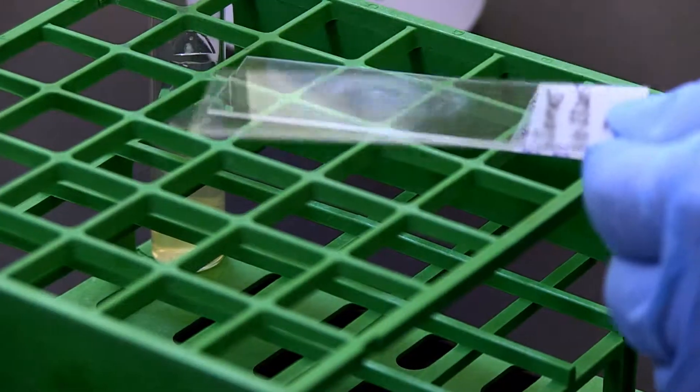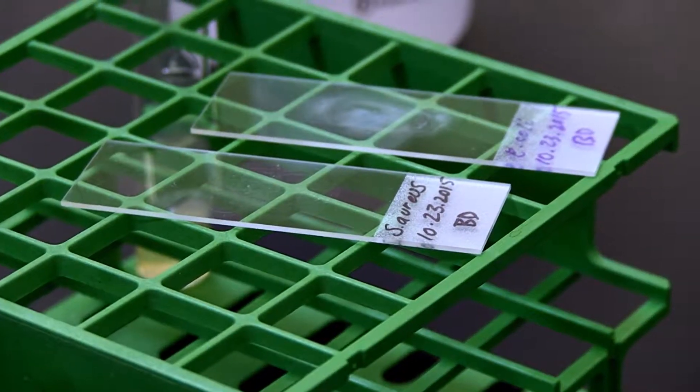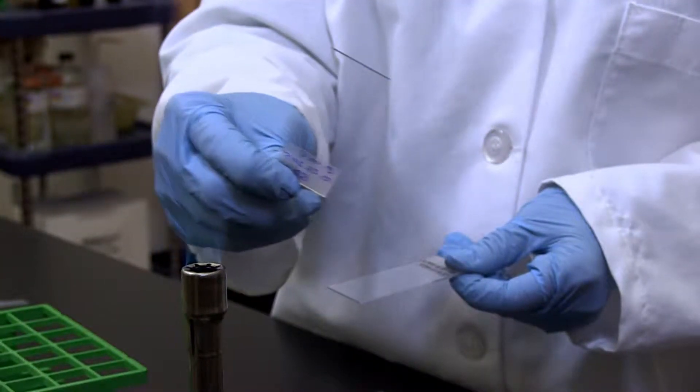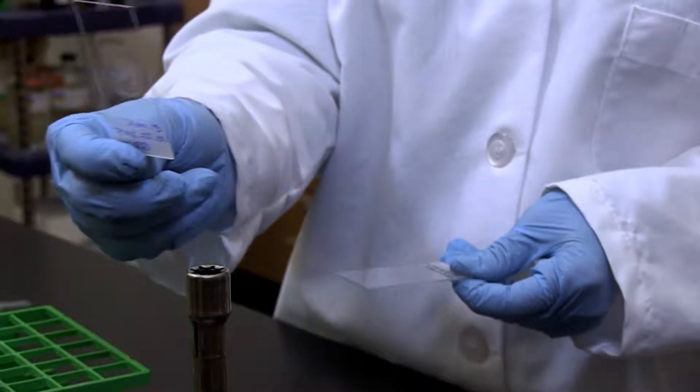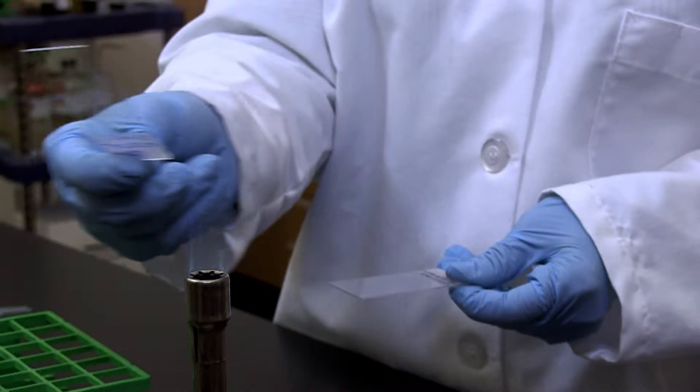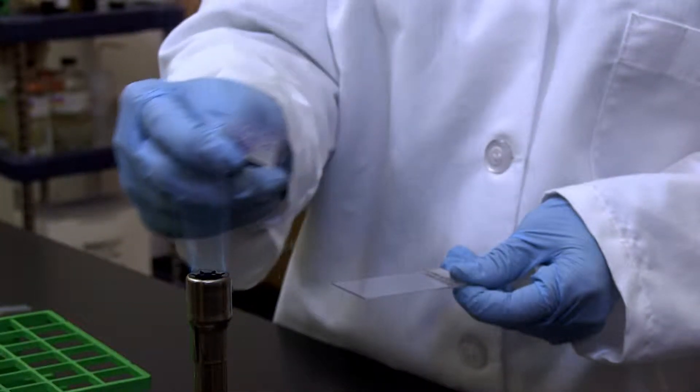Three, allow the smear to air dry completely. This should take 5 to 10 minutes. And four, remember to heat fix the slide. Pass it through the flame of your Bunsen burner three to four times with the smear on top. The slide is now ready to use for staining.